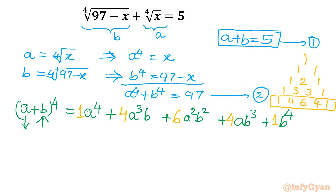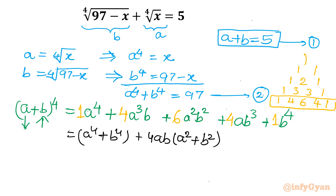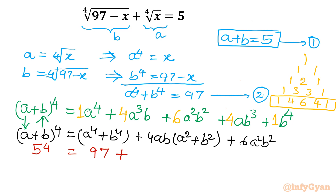Now arranging the terms: the first and last terms give a⁴ plus b⁴. From the second and second-last terms, I take 4ab as common, leaving a² plus b². The middle term is 6a²b². So (a plus b)⁴ equals a⁴ plus b⁴ plus 4ab(a² plus b²) plus 6a²b². Now let us put the values: a plus b is 5, so the left side is 5⁴, and a⁴ plus b⁴ is 97.